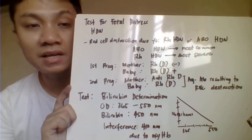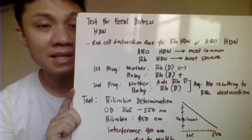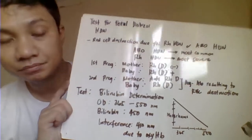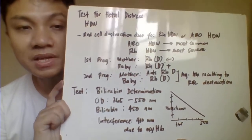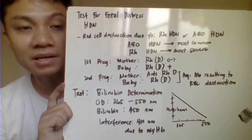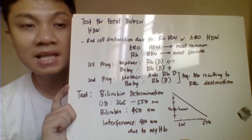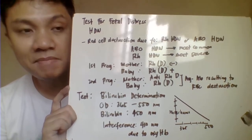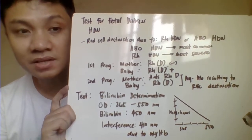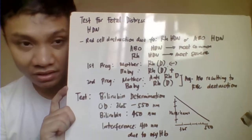However, Rh incompatibility is the most severe one, because the IgG antibody can cross the placenta, whereas the antibody in ABO incompatibility cannot cross the placenta. Taking for example Rh HDN: during the first pregnancy, the mother is RhD antigen negative and the baby is RhD positive, having gotten the RhD from the father.